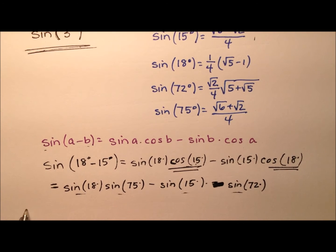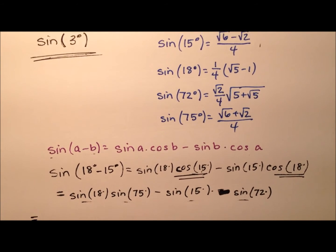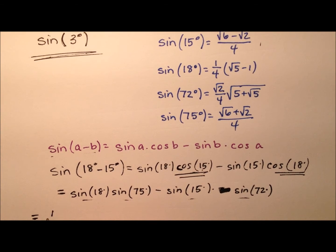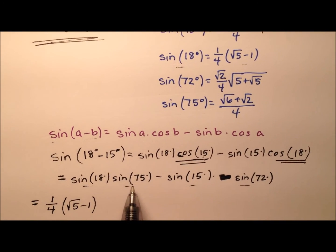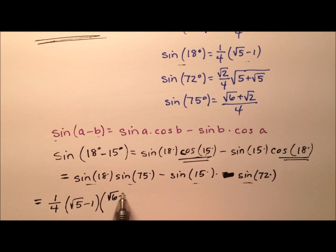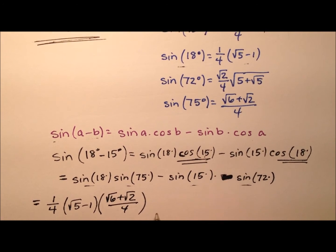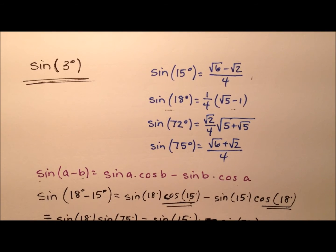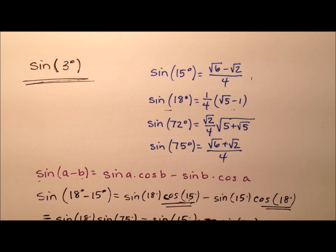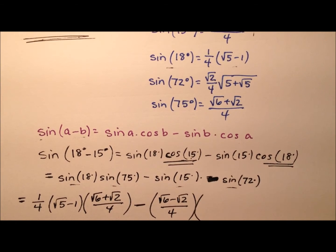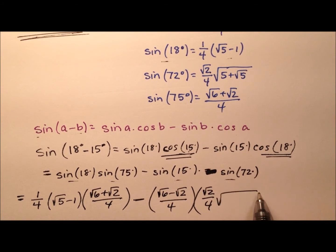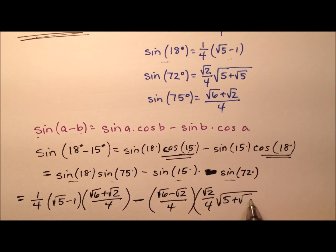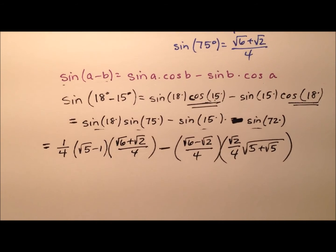Let's go ahead and substitute all of these values in. The sine of 18 degrees is one-fourth times the square root of (5 minus 1), multiplied by the sine of 75, which is the square root of 6 plus the square root of 2, all over 4. Then minus the sine of 15, which is the square root of 6 minus the square root of 2, all over 4, multiplied by the sine of 72, which is the square root of 2 over 4, times the square root expression (5 plus radical 5).